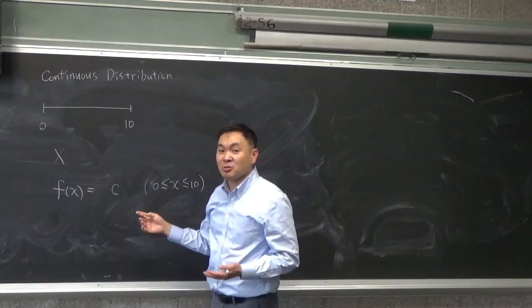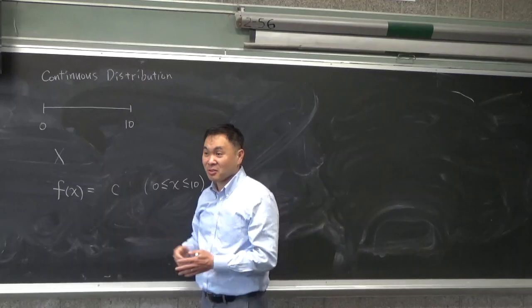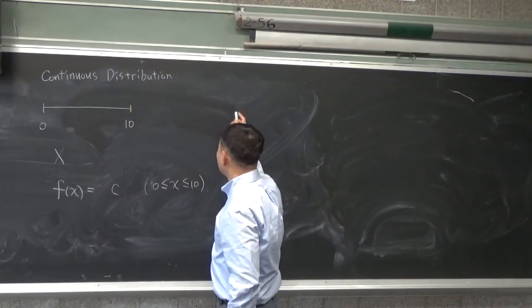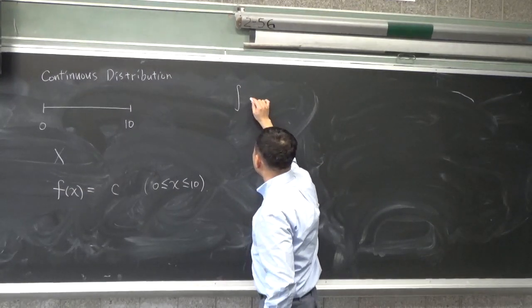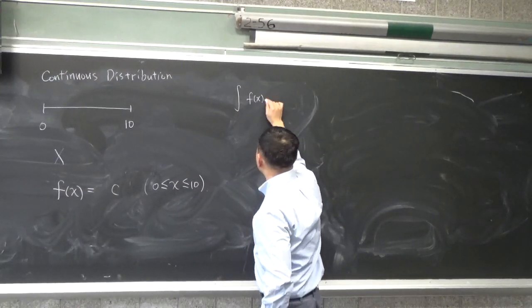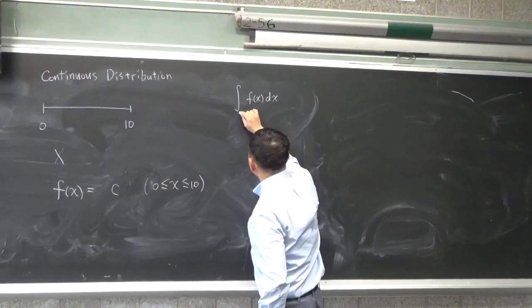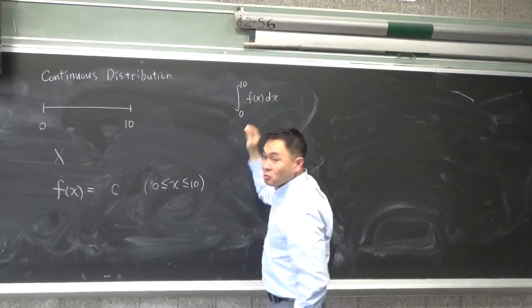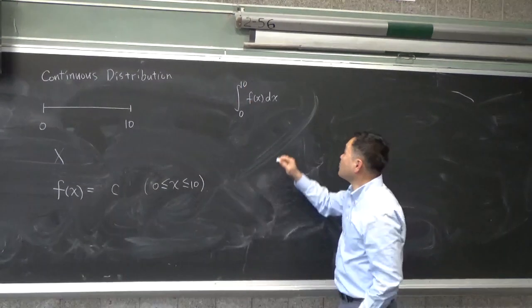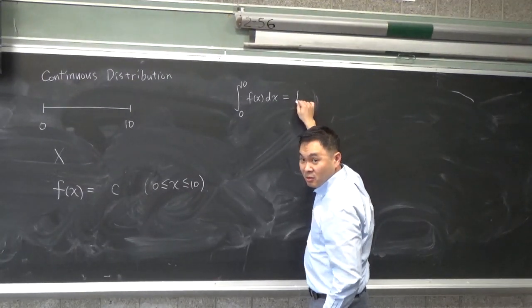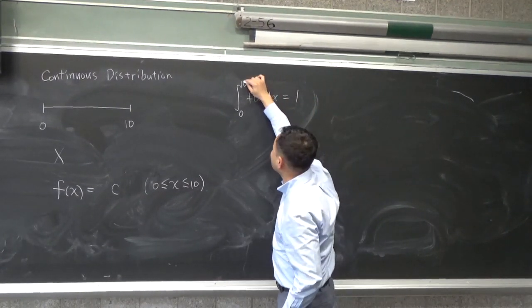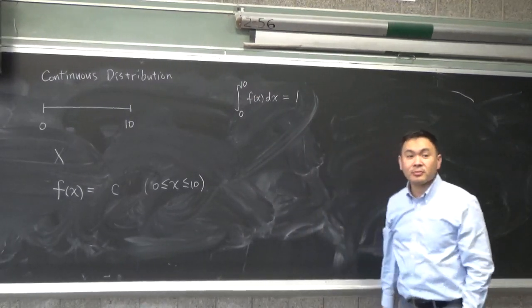Now, instead, you have to do integration. You have to add up every possible value. So what you have is, if you integrate this function f(x) from 0 to 10, which is the domain of the function, this value must equal to 1. Because that accounts for every possibility, right?